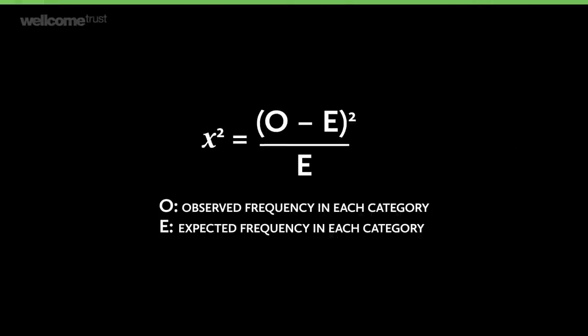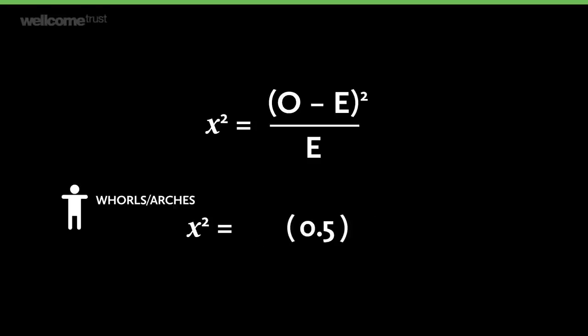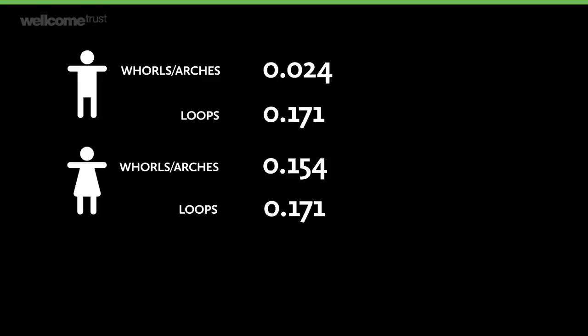Although later on you might meet a Yates modification, which is often used for this two-by-two table, you don't have to remember it — you can look it up. For each cell, we work out the difference between the observed value and the expected value, square it, and divide by the expected value. For men with whorls and arches, the difference is 0.5; we square it to get 0.25, then divide by 10.5 to get 0.024. Once we've done that for all cells, we add them all up to get our chi-squared statistic, which is 0.52.